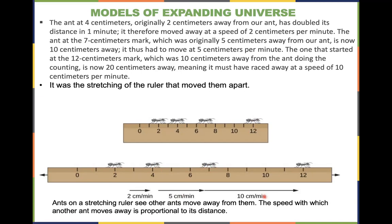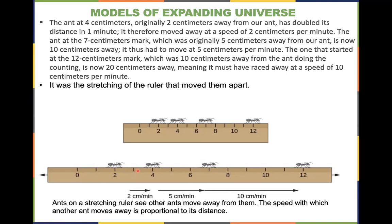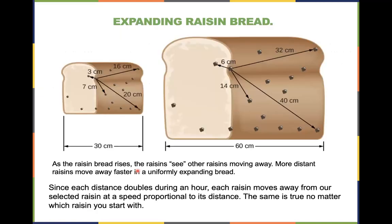The speed at which another ant moves away is proportional to its distance — the ant close by moves slower, and the one further away moves faster. Crucially, it is not that the ants are moving; it is the ruler that is stretching. This is just a model to explain what the expansion actually means — not to be taken as literally identical to the real universe.